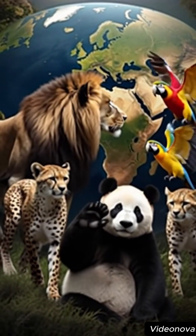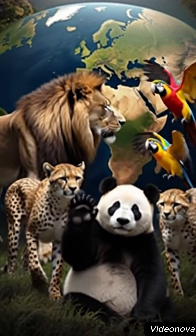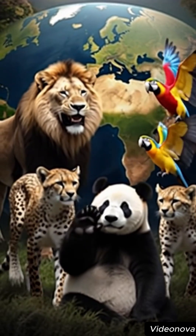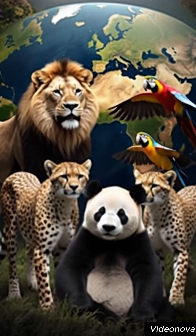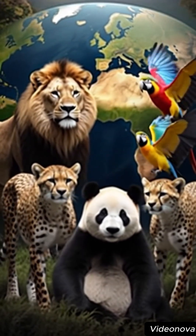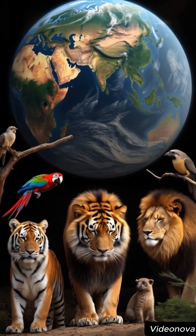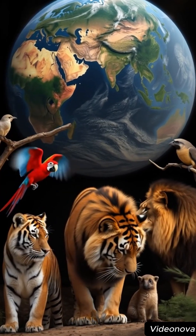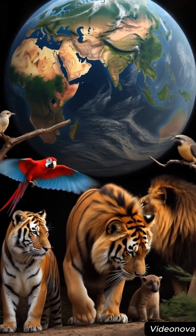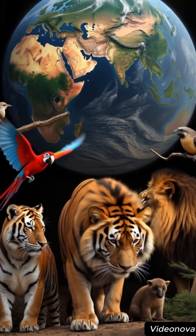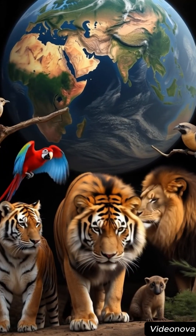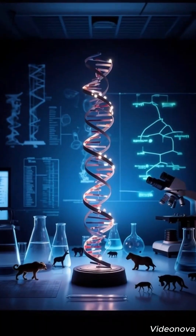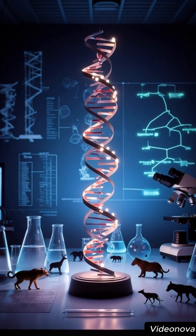Humans have always observed the animals around them, but how can we understand them, compare them, and especially classify them? Animal classification is a vast system that organizes all living creatures according to their most important characteristics. It begins with two major groups: vertebrates, animals with a backbone, and invertebrates, those without one. This first division already creates two completely different worlds.